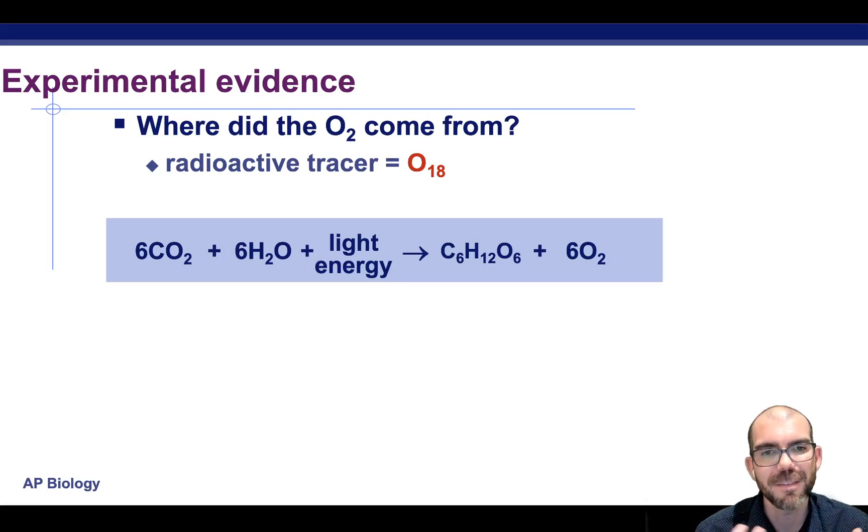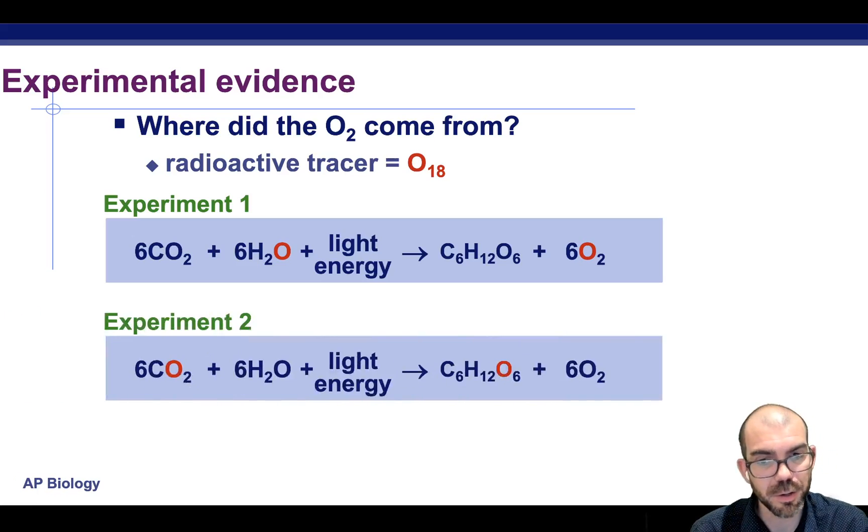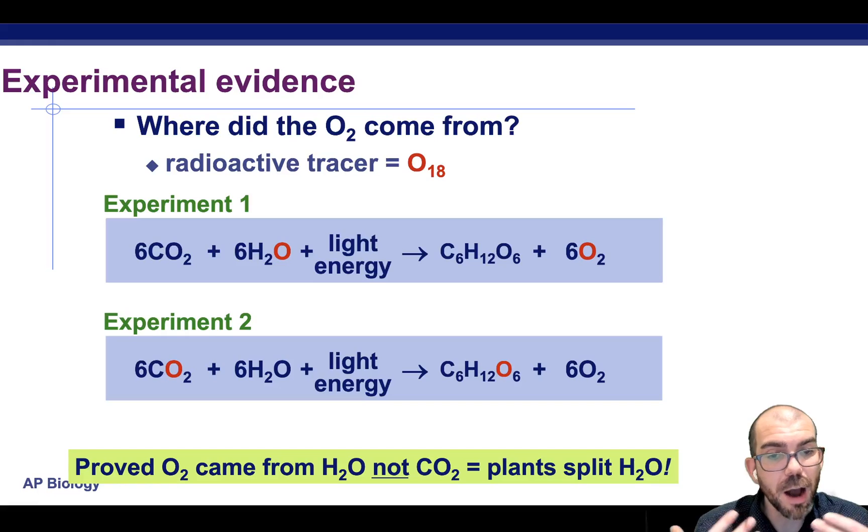In a classic experiment to determine this data, scientists used a radioactive isotope, heavy oxygen-18, and they placed it onto the water molecule. When they provided this heavy oxygen water to a plant, they were able to record it in the oxygen that exited the plant, proving that it's the oxygen from water that's being released, not the oxygen from CO2. Because when they did the same experiment but made CO2 with heavy oxygen, they ended up recording it in the glucose that the plant synthesized.